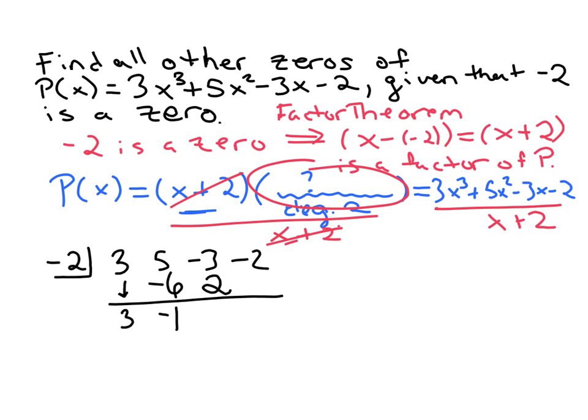Negative one times negative two gives us positive two here. Add these numbers. So negative three plus two, that's negative one. Last multiply negative two times negative one, that's positive two, so we get a zero remainder, which we should get a zero remainder if x plus two really is a factor.